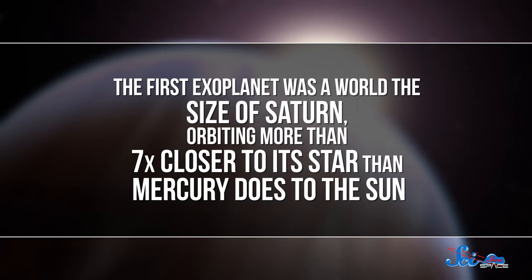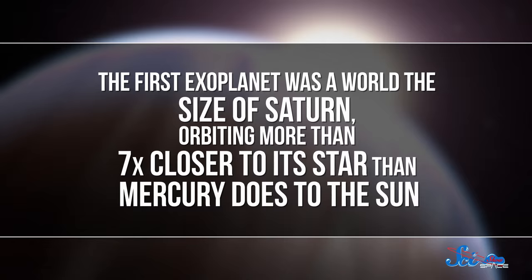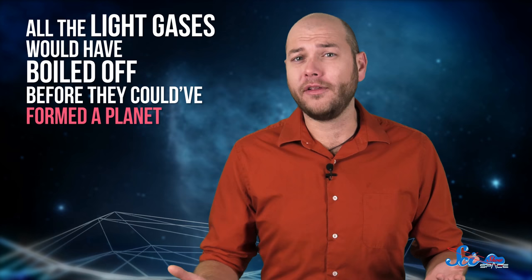But then we found our first exoplanet, the first planet we'd discovered outside of our solar system. And it revealed a situation we used to think was impossible. The first exoplanet was a world the size of Saturn, orbiting more than seven times closer to its star than Mercury does to the Sun. There's almost no way it could have formed so close to its star. All the light gases would have boiled off before they could have formed a planet.